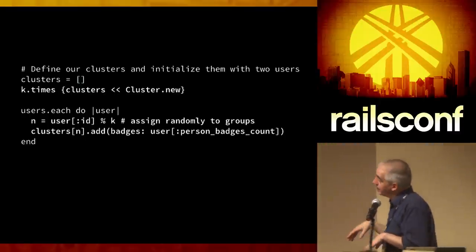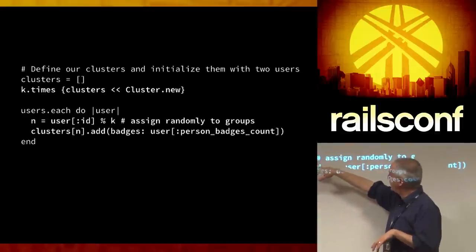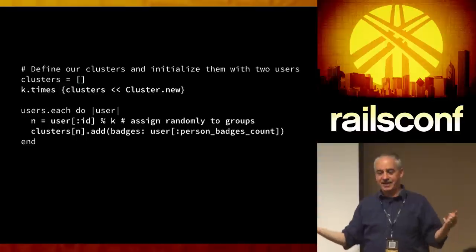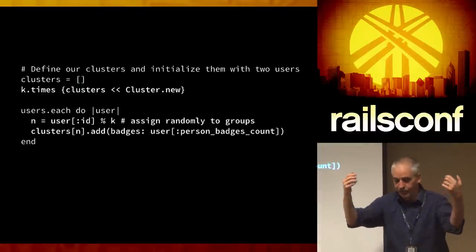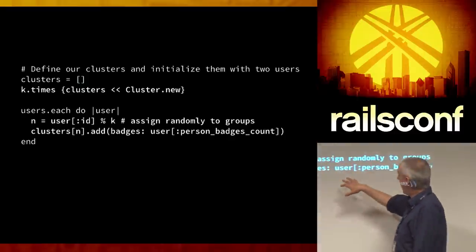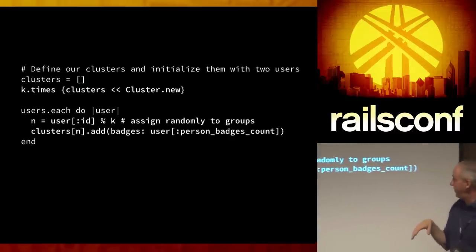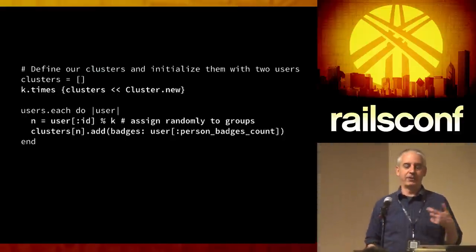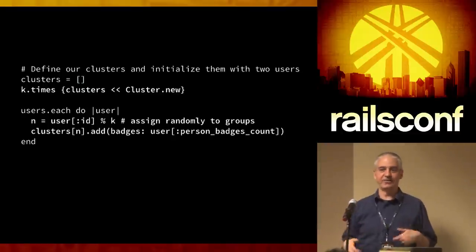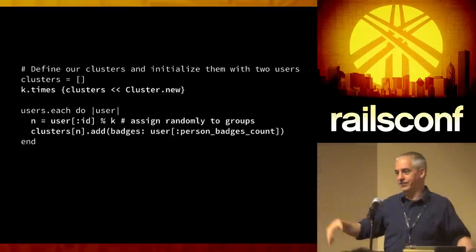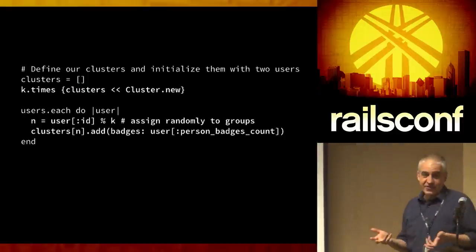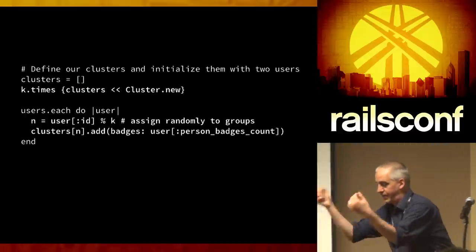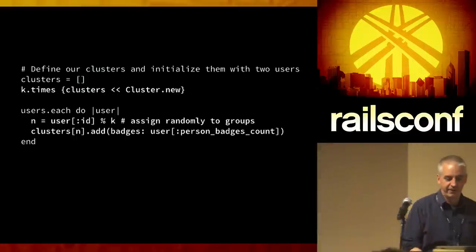I'm going to take all my users and modulo them by k so I end up randomly sprinkling them. The visual of this is: I'm taking all my users and just throwing them out on the floor in random order. The value I'm going to use is badge count — the number of badges people have earned at Treehouse. I think badges correlate with whether people are power users or casual users. You get a badge for finishing a significant chunk of work. I'll use badge count as the one thing I measure.